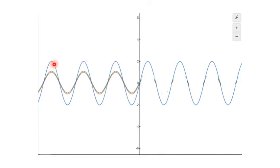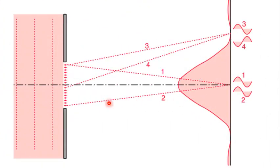When two waves interfere constructively, the resultant wave shown in blue has a higher amplitude. A higher amplitude means higher intensity. So at point O, all of the light falls at the center and they all interfere constructively because they are all in the same phase. This gives a very bright spot at the center with maximum intensity.